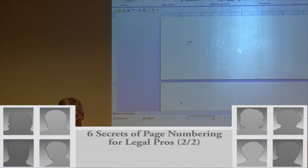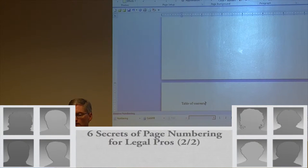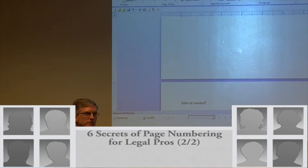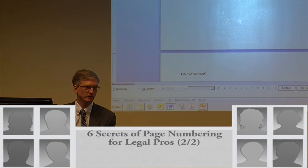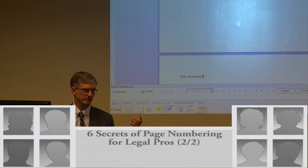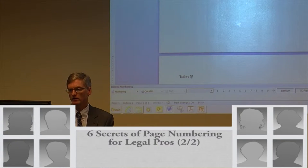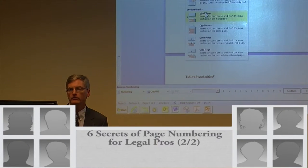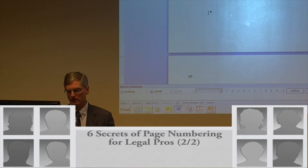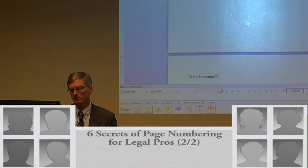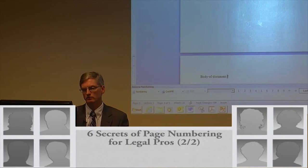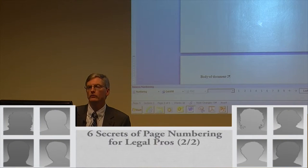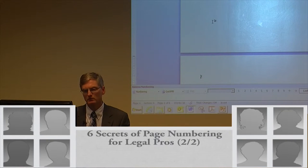I'm in section two, so I type 'table of contents.' Now I want my table of authorities to start on a new page, but it doesn't need a new section because it will have the same page numbering as the table of contents. So I just insert a regular page break. There's my page break — table of authorities. I'm still in section two. Now I need another section break for the body of the document, and then another break for the appendix.